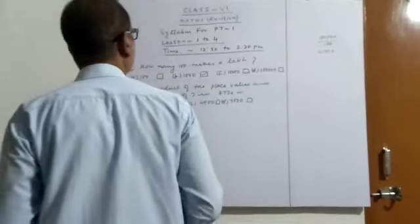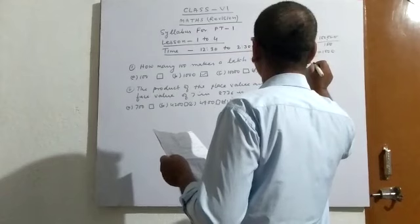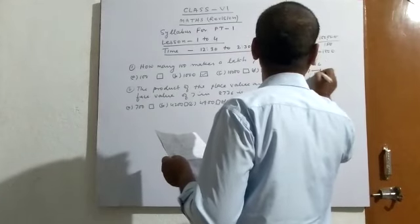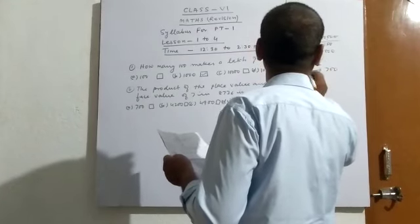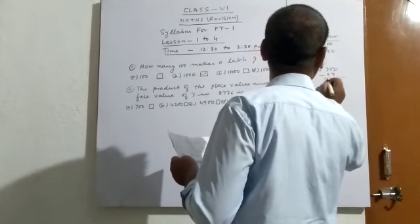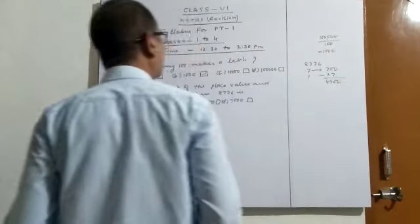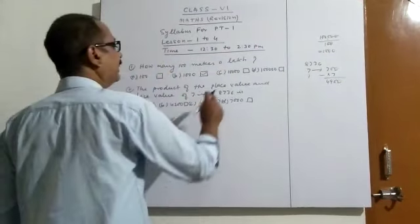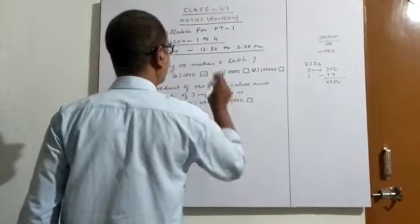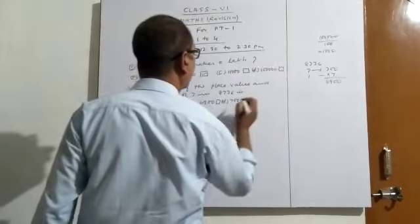Now look at the product of the place value and face value. The 7's place value is 700, and the face value is 7. So the product is 4900.